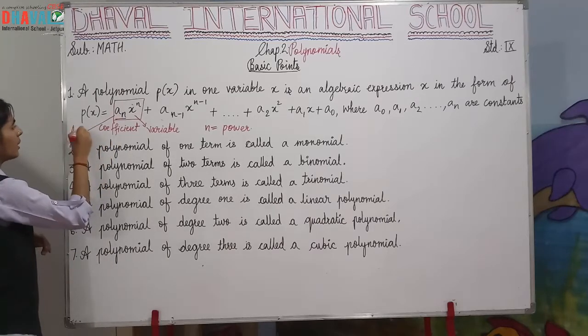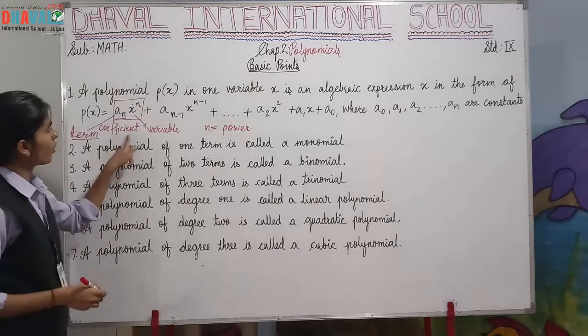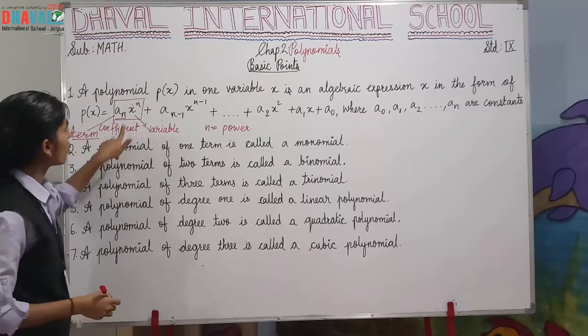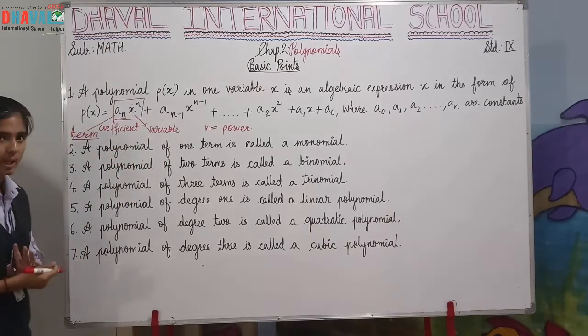So we always show them as An and x, and it is a term. When we get together a coefficient and a variable, what do we call it? A term.